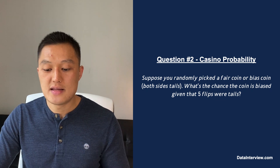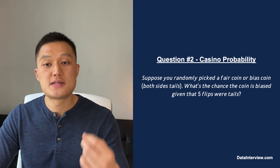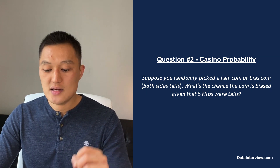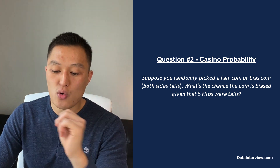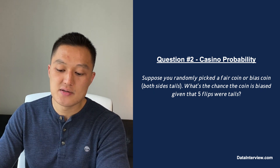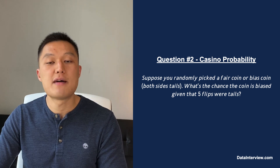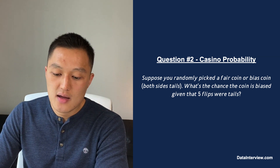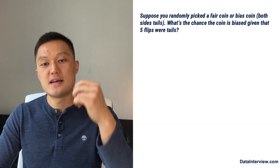Let's dive into the next problem, which involves casino probability. Suppose you randomly pick either a fair coin or a biased coin with both sides tails. What's the chance that the coin is biased, given that five flips were all tails?